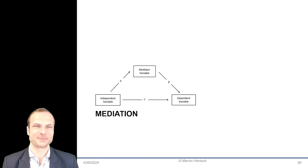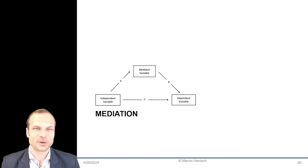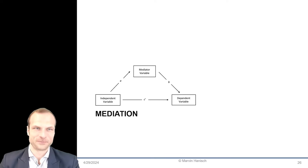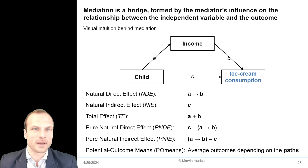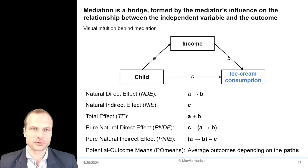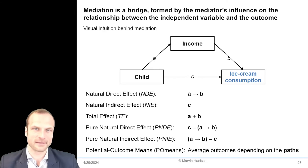Welcome to Statistics Made Easy. In this session, we are looking into mediation models. In simple terms, mediation is a bridge formed by the mediator's influence on the relationship between the independent variable and the outcome.